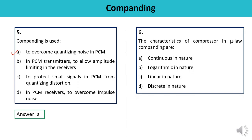Question number six: What is the characteristic of the compressor in Mu law Companding — continuous, logarithmic, linear, or discrete? From the characteristic curve of Mu law, the characteristic is continuous — approximately linear for smaller input levels and logarithmic for higher input levels, but the whole curve is continuous. The answer is A.